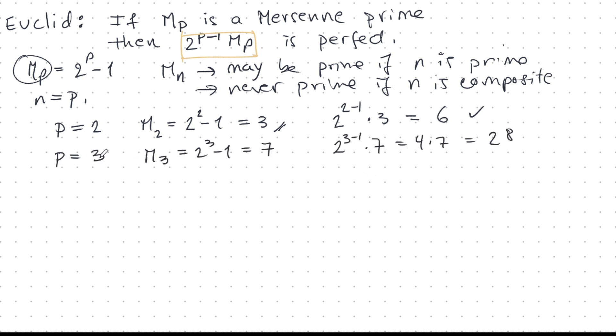Let's keep going. The next prime is p is 3, my Mersenne number is 7, and that's prime. So this is a Mersenne prime. And I should get a perfect number. And indeed, 28 corresponds to this Mersenne prime.